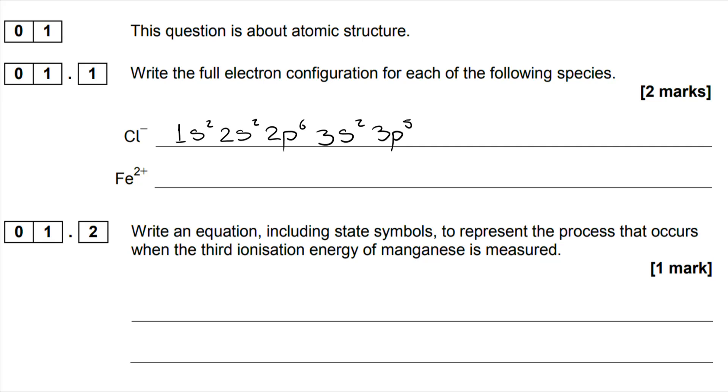We don't want that. We want a chloride ion - it's gained one electron, so we're actually aiming for the 3p6 at the end there.